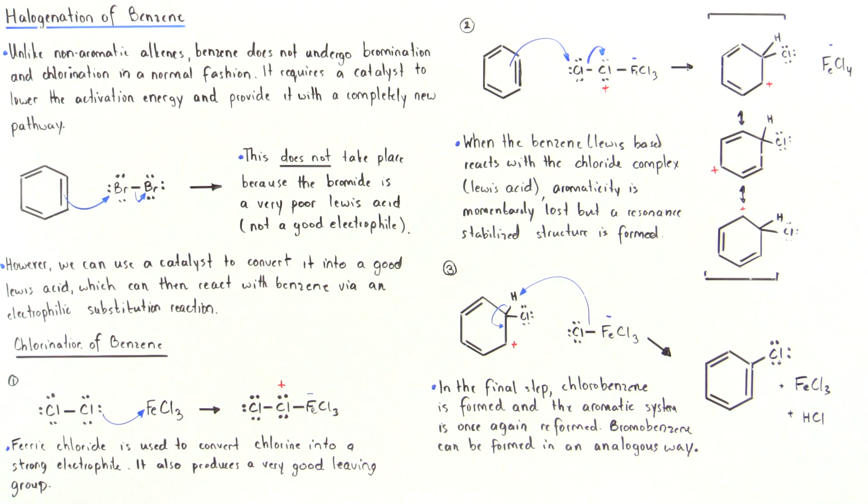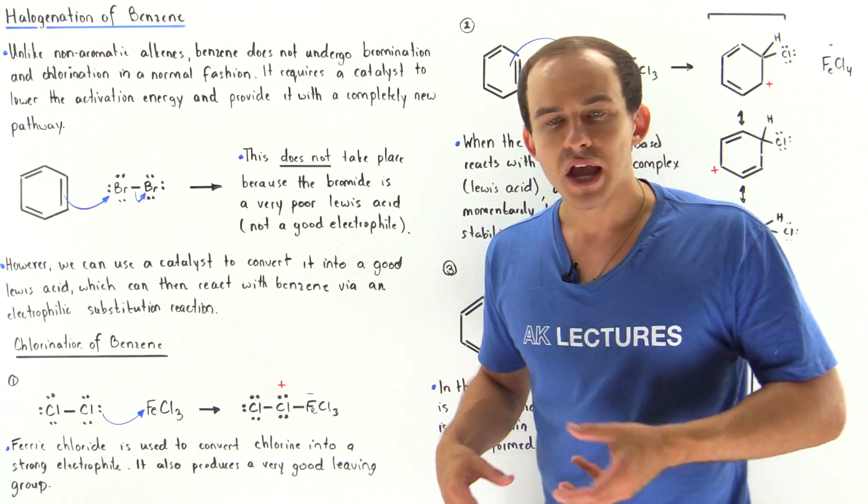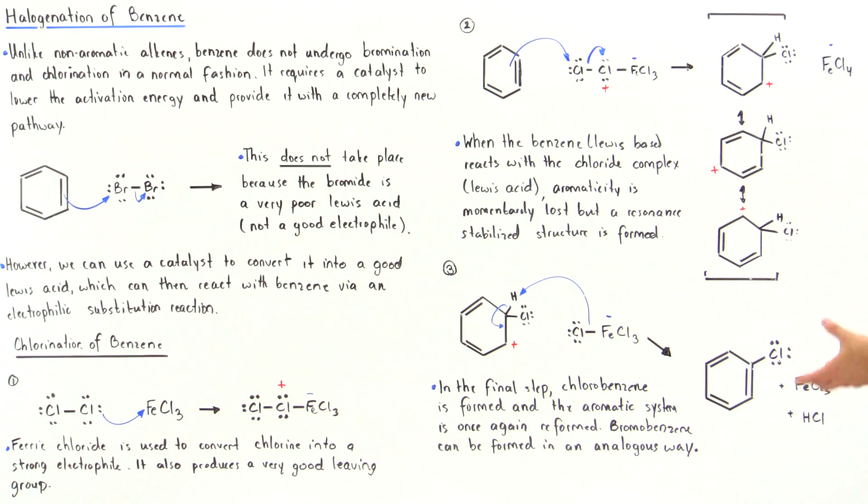In the final step, chlorobenzene is formed and the aromatic system is once again reformed. We basically form what we wanted to form in the first place.